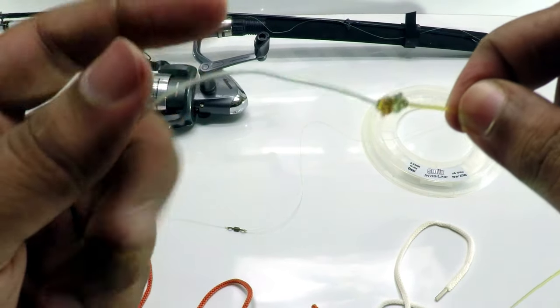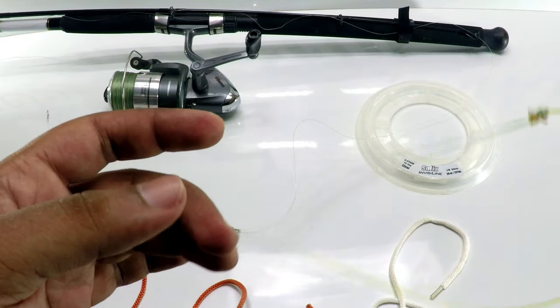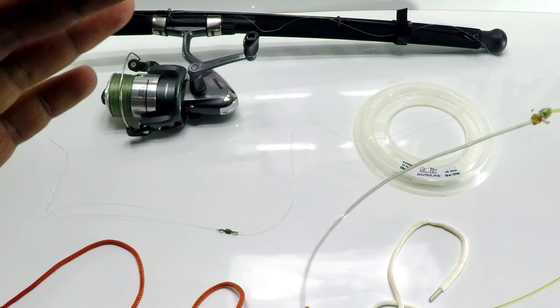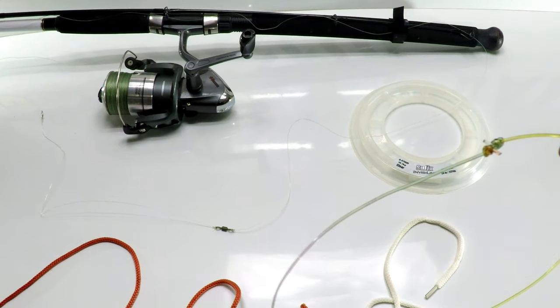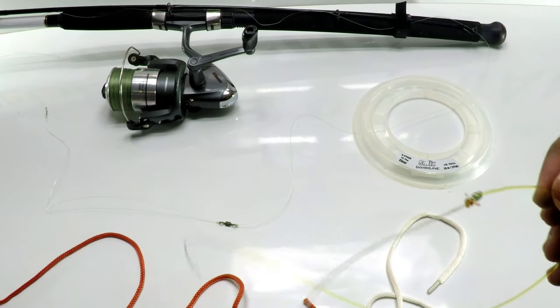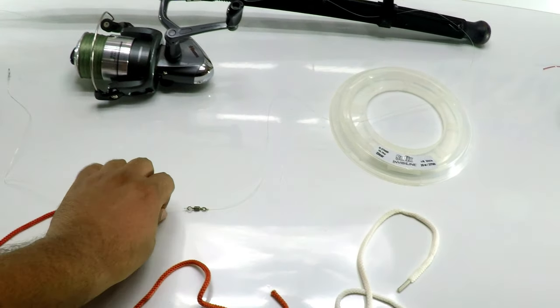You can use it to connect the main line to the shock leader, or to connect a braid line to a monofilament when backing up a braid line spool with monofilament.